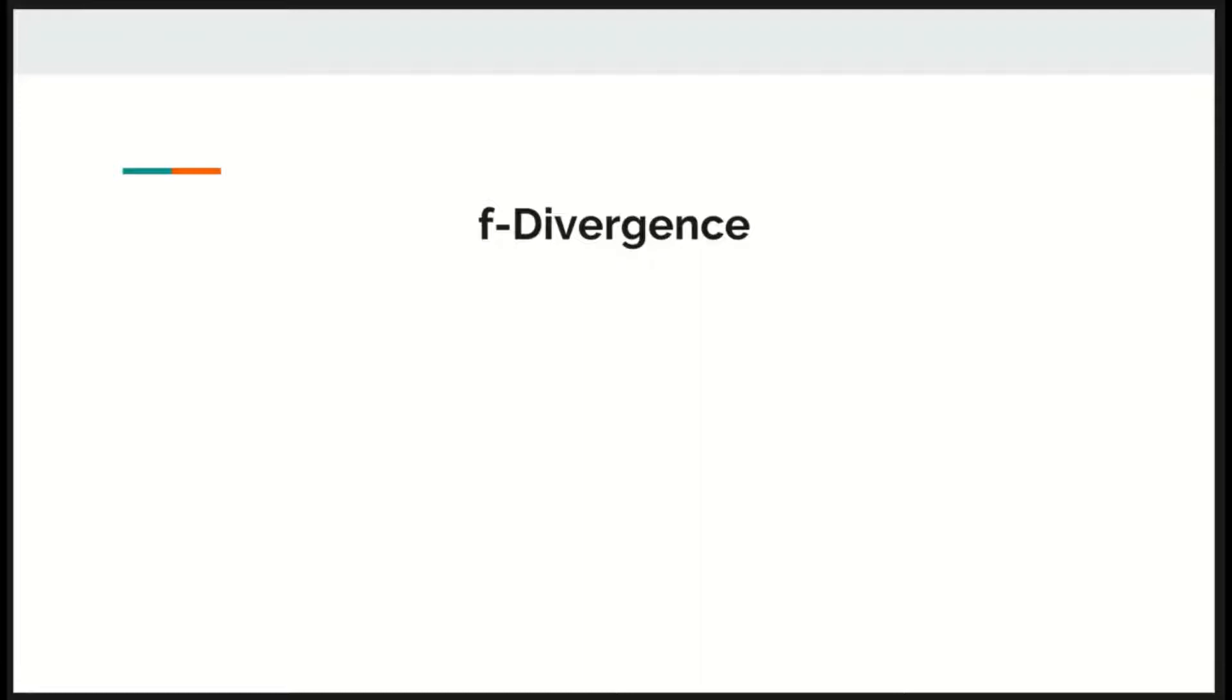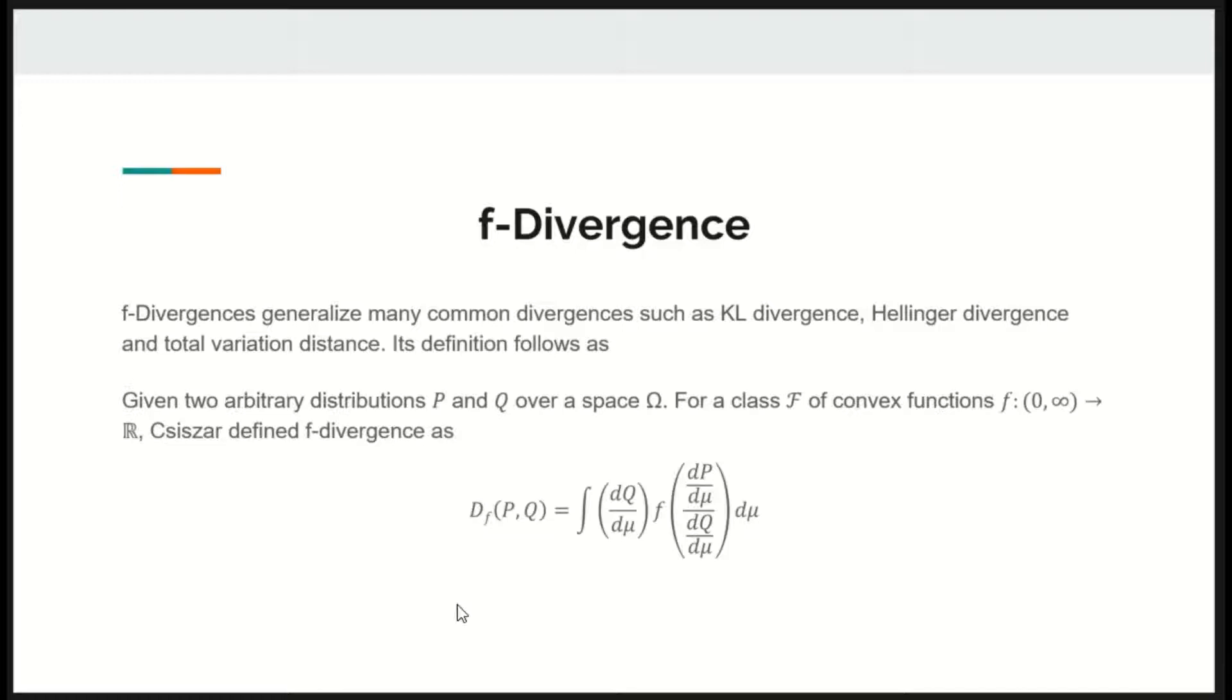F-divergence is a function that measures difference between two probability distributions. They generalize many common divergences such as KL divergence, Hellinger divergence and total variation distance.